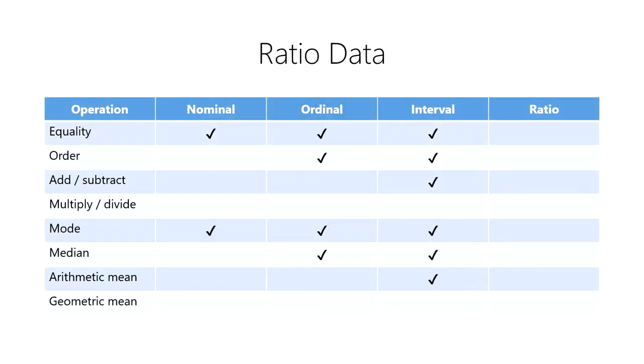We can perform a few more mathematical operations on ratio data than we can on nominal, ordinal, and interval data. In addition to all of the operations we've seen so far, we can also multiply and divide ratio data.